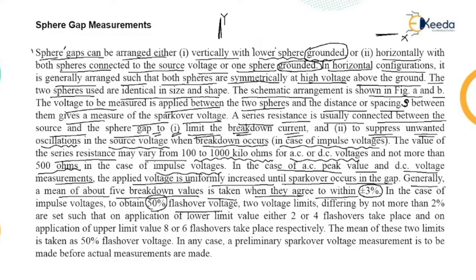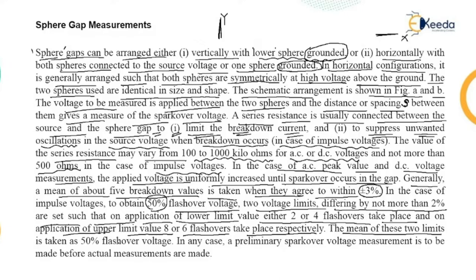Generally a mean of about five breakdown values is taken when they agree to within plus or minus three percent. In case of impulse voltage, to obtain 50 percent flash over voltage, two voltage limits differing by not more than two percent are set such that on application of the lower limit, two or four flash overs take place, and on application of the upper limit, eight or six flash overs take place respectively. The mean of these two limits is taken as 50 percent flash over voltage.